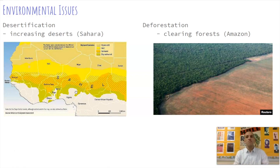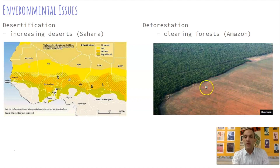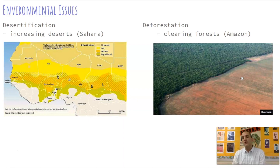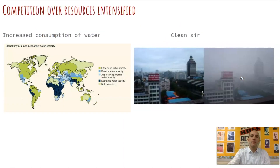We also see deforestation — the clearing of forests in the Amazon. This is an example of an area that used to be rainforest but has been cut down for logging and lumber. We have a lot of stuff in the industrialized world made of wood that comes from trees, and people are clearing these forests without replanting, leading to a lack of biodiversity and impacts on weather and wind patterns.